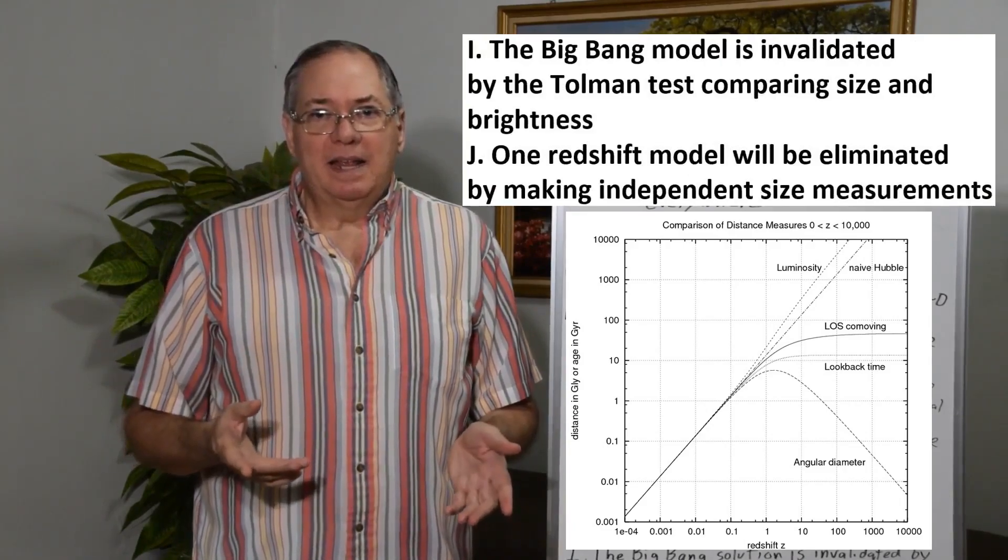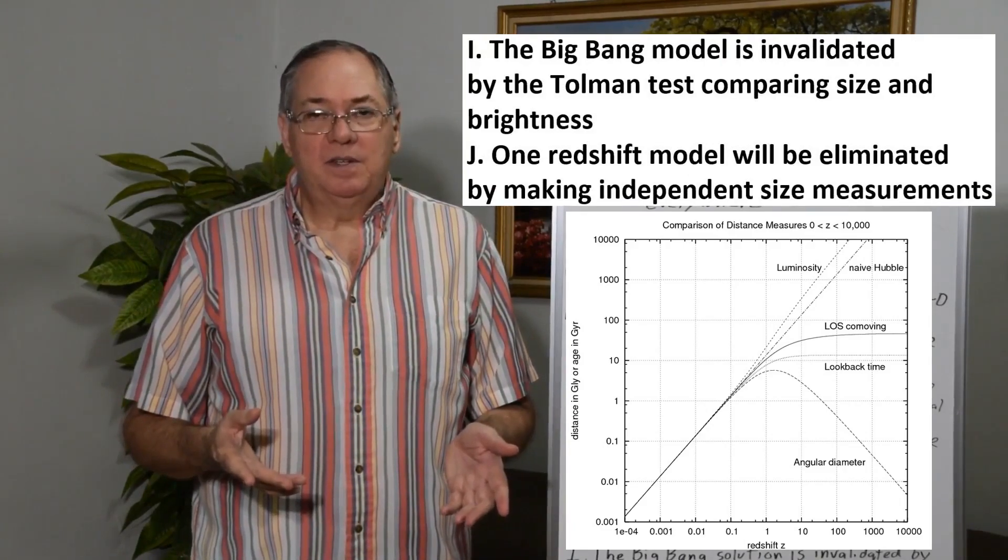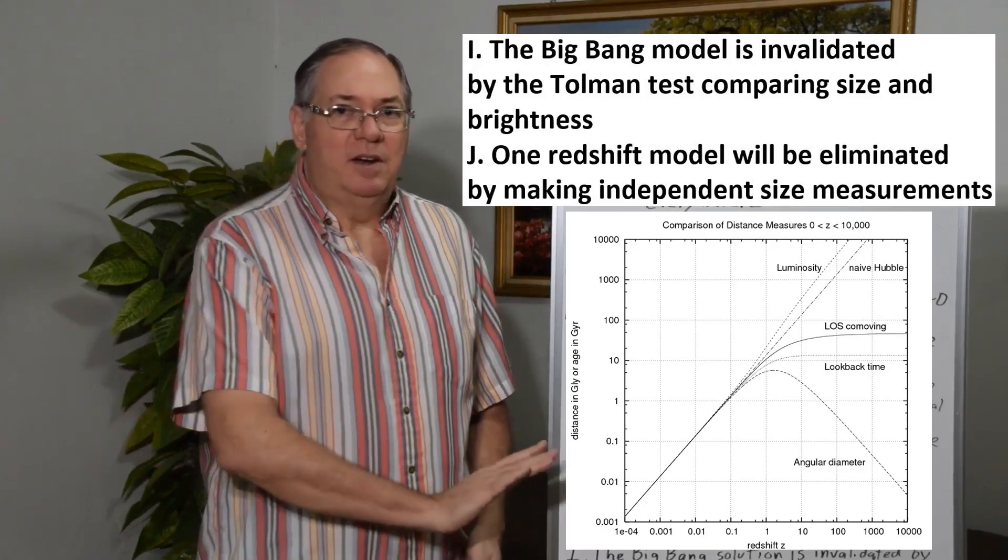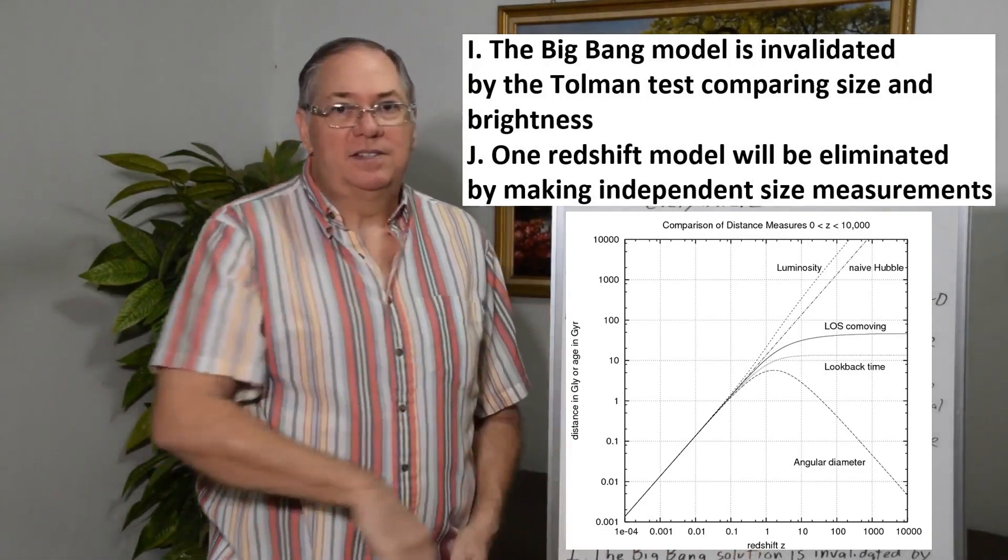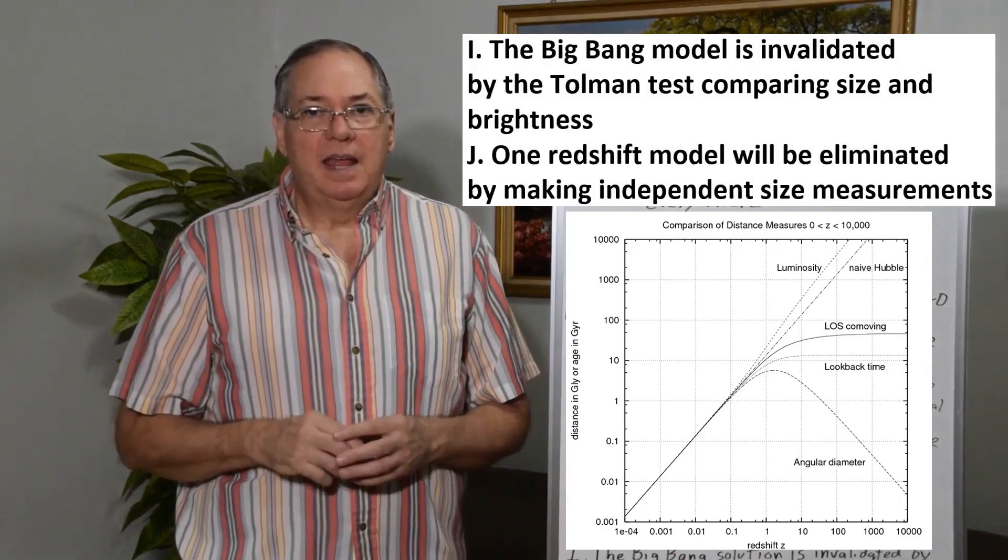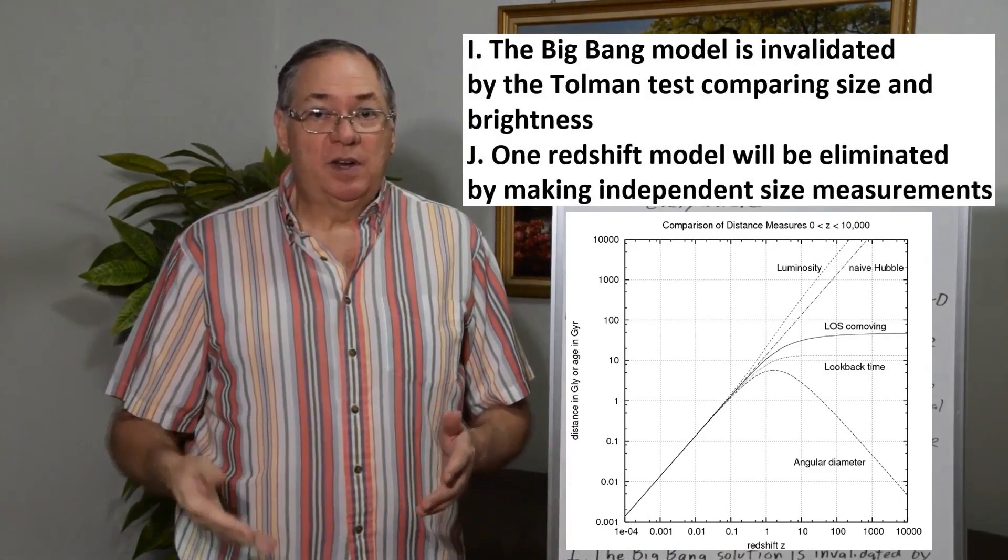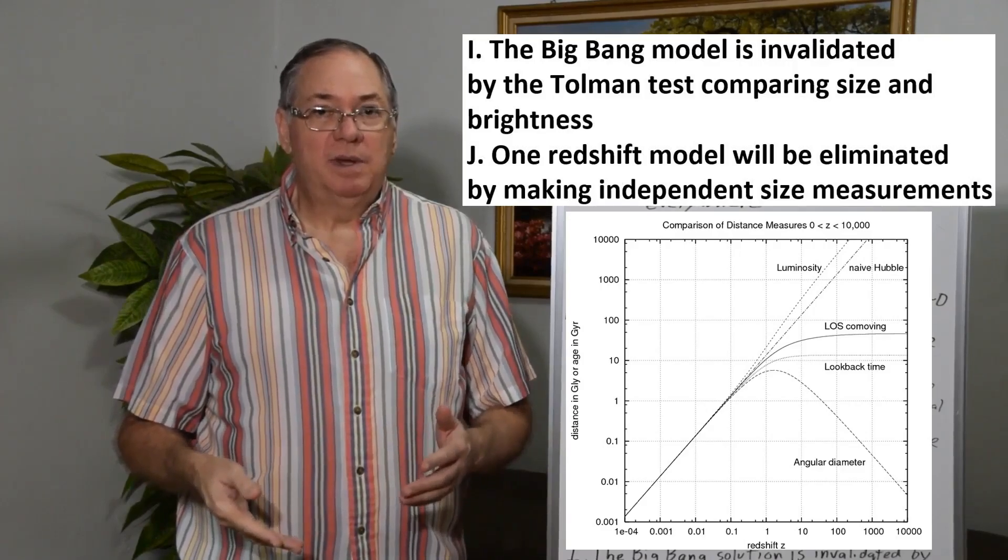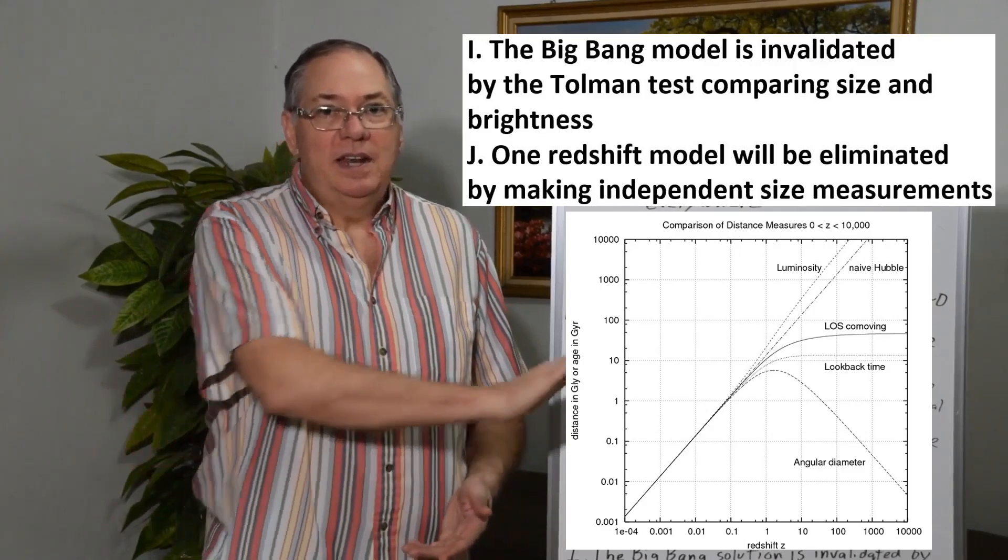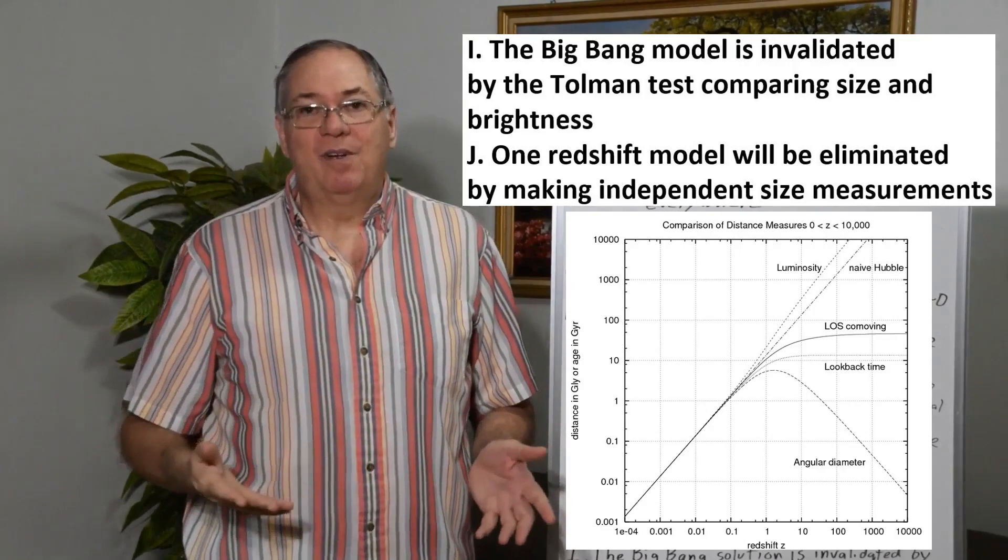Now the Big Bang solution has been invalidated because of the Tolman test. Because if you look at the curve that goes like this on the chart I'm showing, that is the curve for the Big Bang, where galaxies were extremely close to us when the light was emitted. And versus the linear approximation where they're a lot farther away.